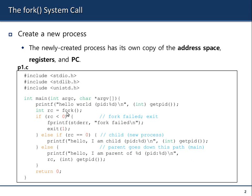Fork returns two times — to the parent and to the child process. It returns zero to the child process, and it returns the process ID to the parent process. The return value to the parent is not shown here in the code, but it was illustrated last time.